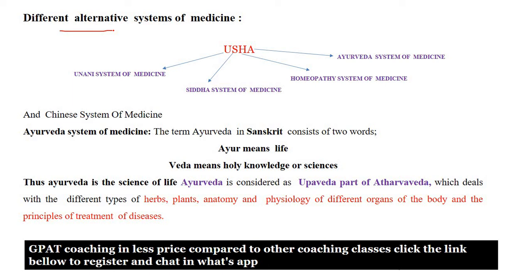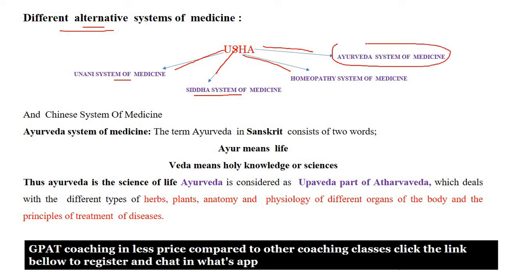You can see different types of alternative systems in medicine. Just remember 'Usha Fan.' From this Usha Fan, you can easily write the names. U indicates Unani system of medicine, S indicates Siddha system of medicine, H indicates Homeopathy system of medicine, and A indicates Ayurveda system of medicine. These are the four different alternative systems of medicine we have apart from allopathic medicine.